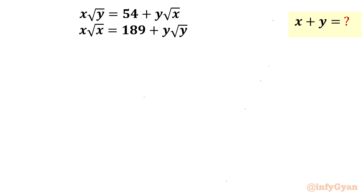Welcome back to Infigyan, my dear friends. In this very exciting video on algebraic challenging equations, we are going to take up one very interesting system of equations. The equations are x√y = 54 + y√x and x√x = 189 + y√y. Here x and y are real, and we have to evaluate the sum x + y.